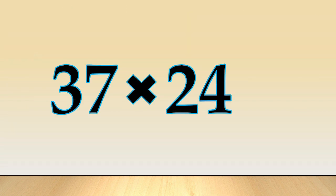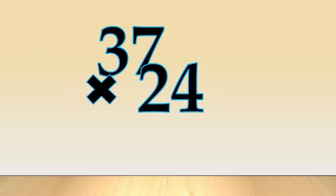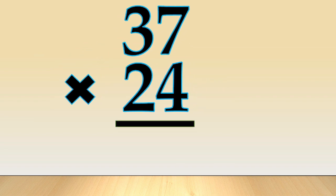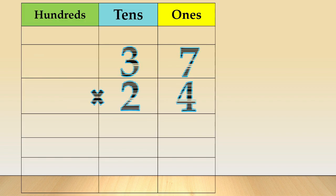Now, let's get started. Let's look at the number sentence: 37 times 24. Arrange the numbers in columns like this. Place the digit of the number in a column based on its place value.